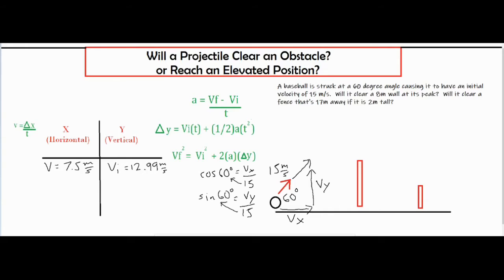On the horizontal side, V equals 7.5 meters per second — no subscript because there are no forces acting horizontally, so it's constant motion with no initial or final distinction. On the vertical end, gravity is acting, so there will be acceleration as it rises and falls. I call it VI for initial vertical velocity, and we also have acceleration of negative 9.8 meters per second squared.